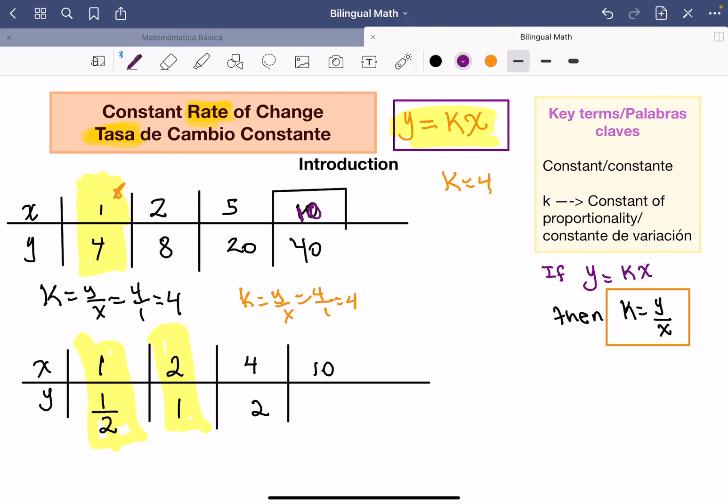So let me do it in here. Y equals, not y. I'm trying to do my k. So I'm going to do my k. k equals y over x, y over x. So y equals 1, 1 over 2. I'm doing this, 1 over 2.